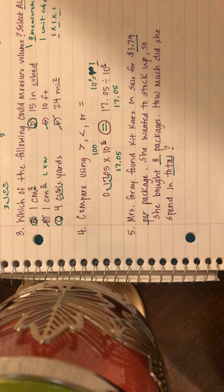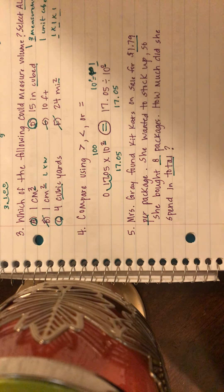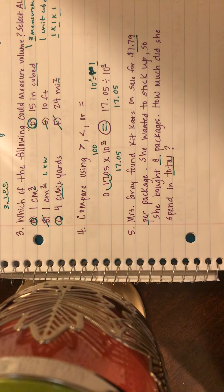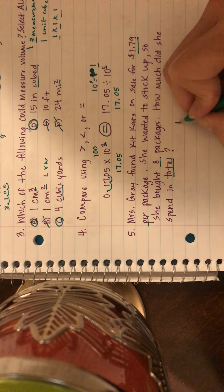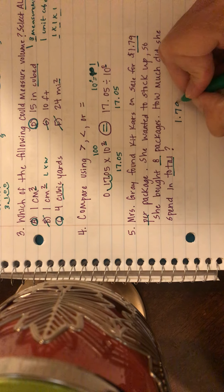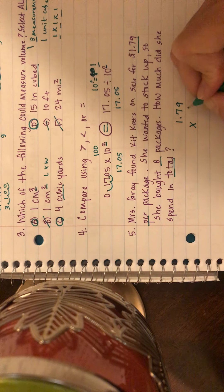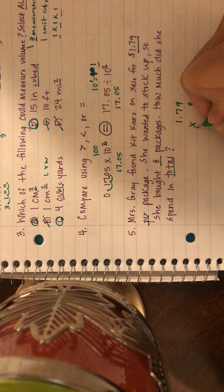So two things here, I could use repeated addition and add $1.79 eight times, but I want to be quick and I want to be efficient and I want to be accurate. So in fifth grade we've worked on being efficient, which means quick and accurate, so I'm going to multiply. So I'm going to write out 1.79 times 8.